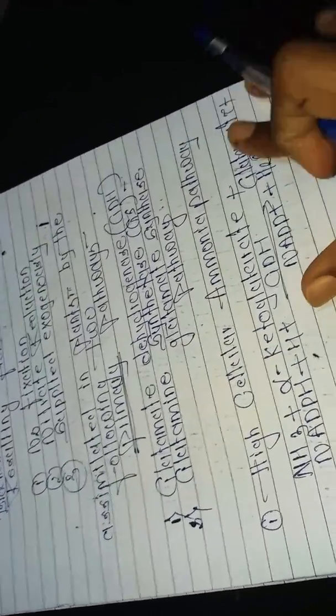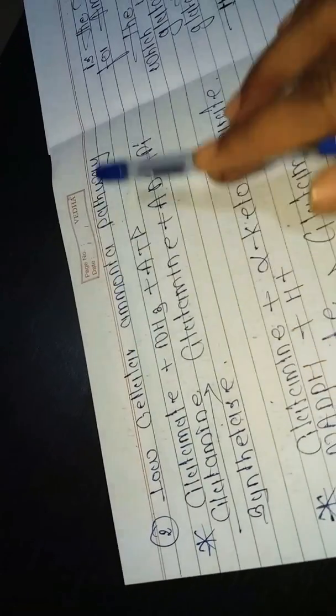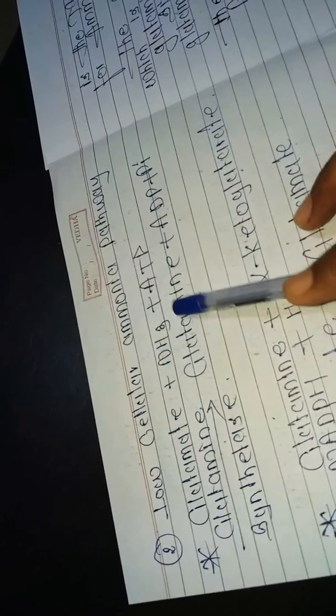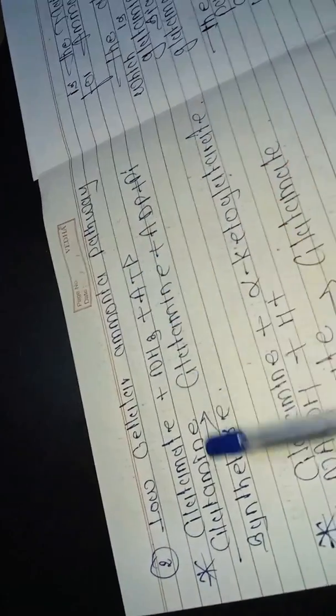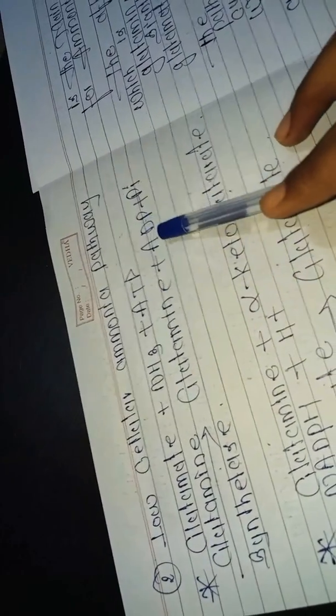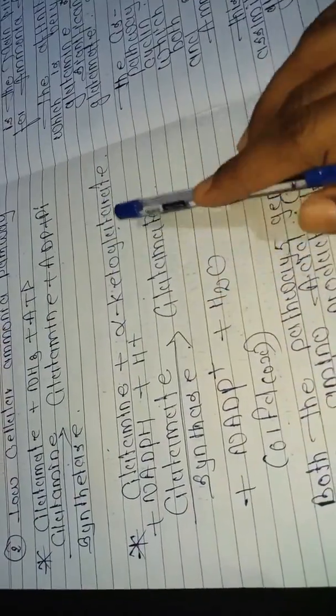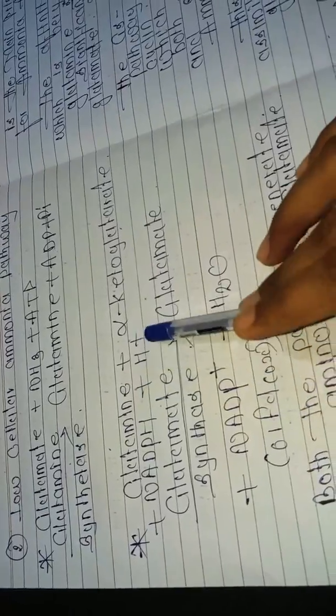The second type is the low cellular ammonia pathway via glutamine synthetase. First reaction: glutamate plus NH4+ plus ATP produces glutamine plus ADP plus inorganic phosphate. Second reaction: glutamine plus alpha-ketoglutarate plus NADPH plus H+ in the presence of glutamate synthase produces two glutamate plus NADP+ plus water.